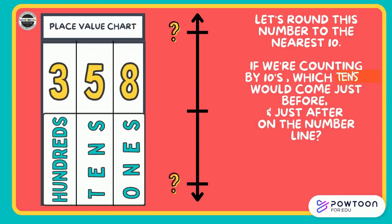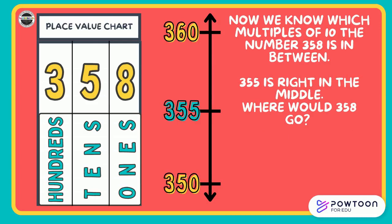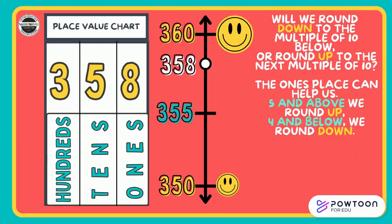Let's round this number to the nearest 10. If we're counting by tens, which tens would come just before and just after on the number line? Pause the video and discuss this with your partner. Now we know which multiples of 10 the number 358 is in between. 350 is below and 360 is above. We see 355 right in the middle. Where would 358 go? Point it out on the number line. Will we round down to the multiple of 10 below or round up to the next multiple of 10? The ones place can help us: 5 and above, we round up; 4 and below, we round down. I'm looking in the ones place of 358 — I see an 8. That's 5 and above, so 358 rounded to the nearest 10 is 360.